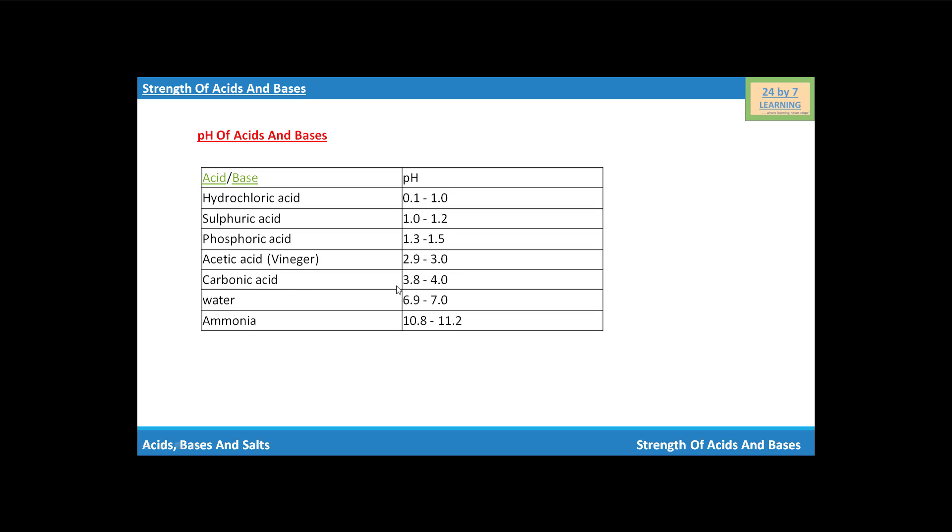Carbonic acid will have pH between 3.8 to 4.0. Water, that is neutral and is neither acidic nor basic, will have pH between 6.9 to 7. Ammonia, that is a base, will have pH between 10.8 to 11.2.